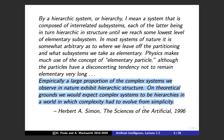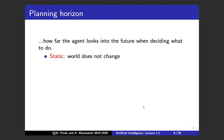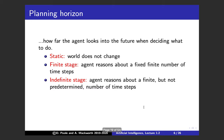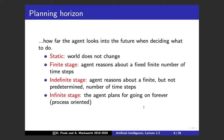We won't talk much about hierarchical systems in this course, but it's important to know we need to extend to them. One dimension we will consider is the planning horizon — how far the agent looks into the future when deciding what to do. The simplest case is a static world that doesn't change. Then there's a finite stage with a fixed number of time steps, an indefinite stage with a finite but not predetermined number of steps, and an infinite stage where the agent plans on going forever.